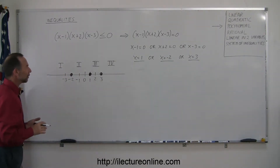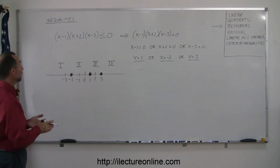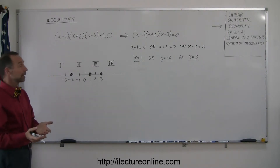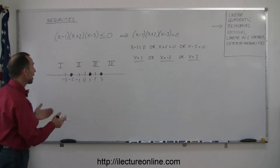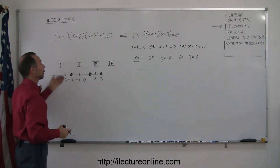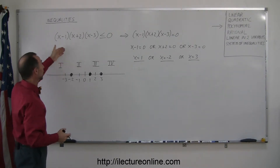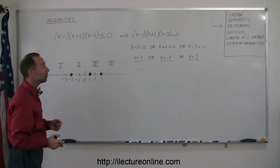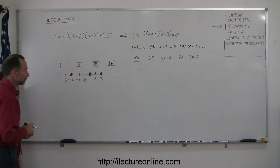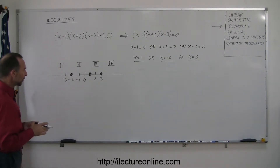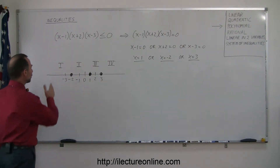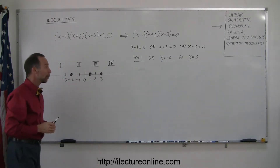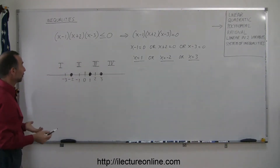The only real difference between a polynomial inequality and a quadratic inequality is that you have more regions. If this were a polynomial to the fourth or fifth power, you would just have more regions to deal with. To figure out which of these four regions satisfies the inequality, we're going to have to plug in test points.